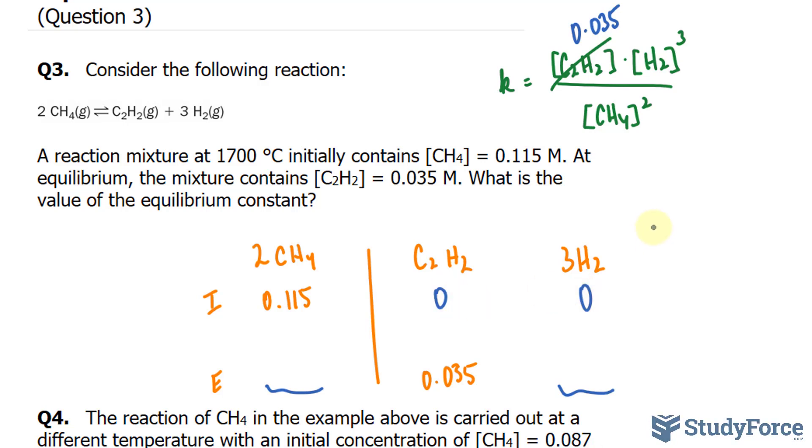Now we use the formula in one of our previous videos where C is equal to E minus I, and we can use this now to find out the C row of our ICE table. So let's find C of this column. I'll substitute E with 0.035 minus the initial of 0, and the change is 0.035. So I'll place that right there.